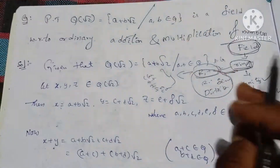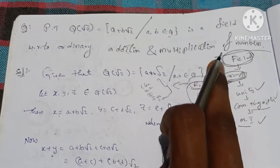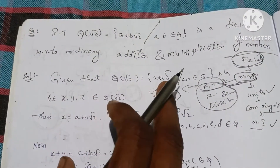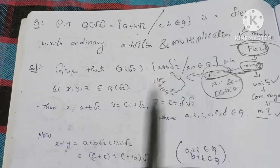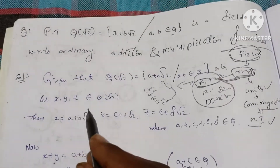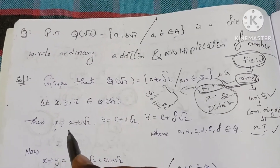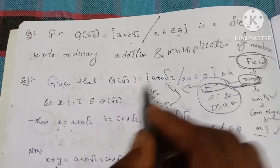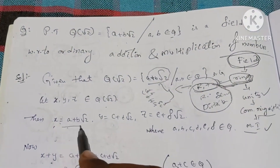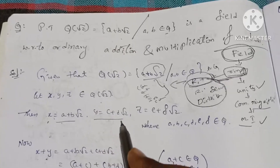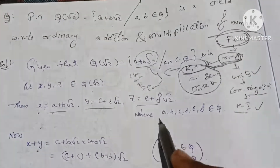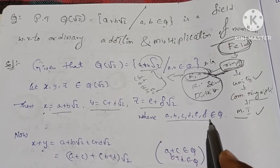Let x, y, z be elements of Q(√2). So let x equal a plus b root 2, y equal c plus d root 2, z equal e plus f root 2, where a, b, c, d, e, f all belong to Q.